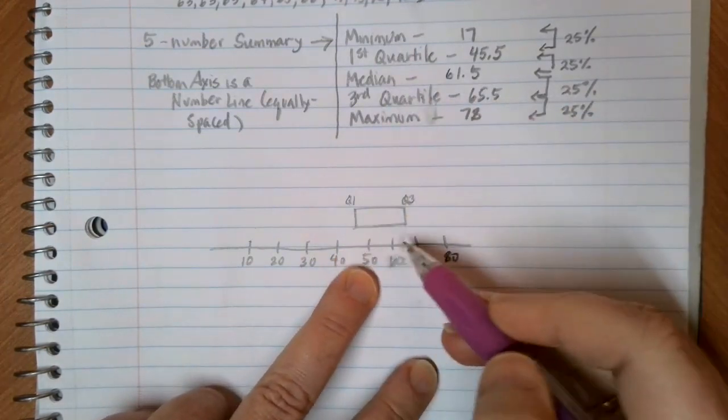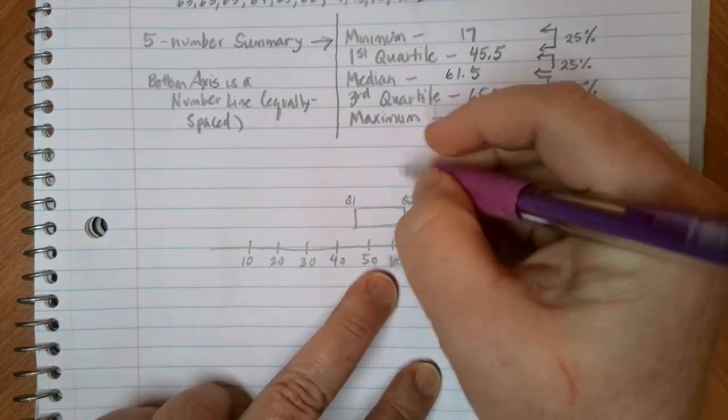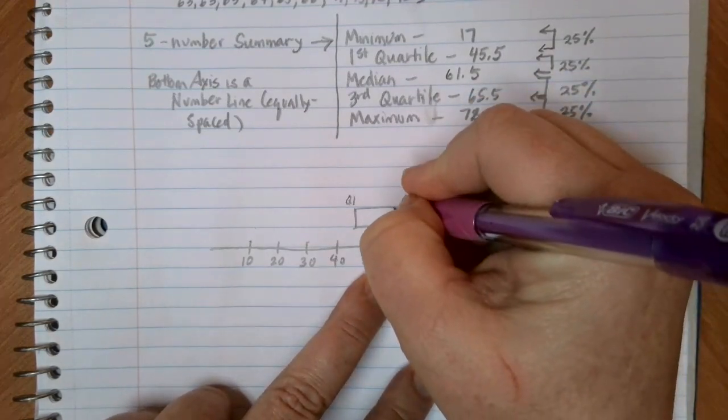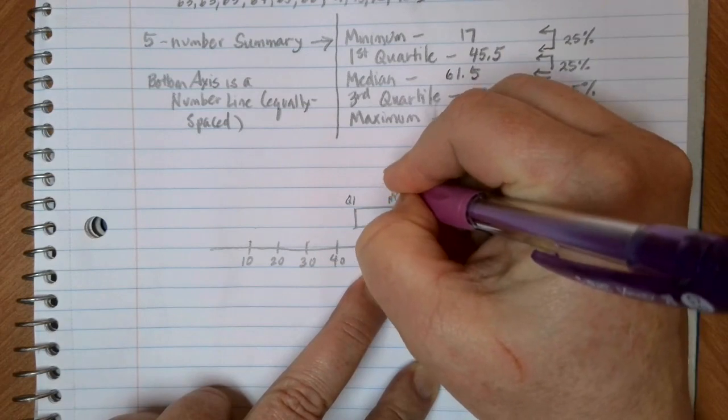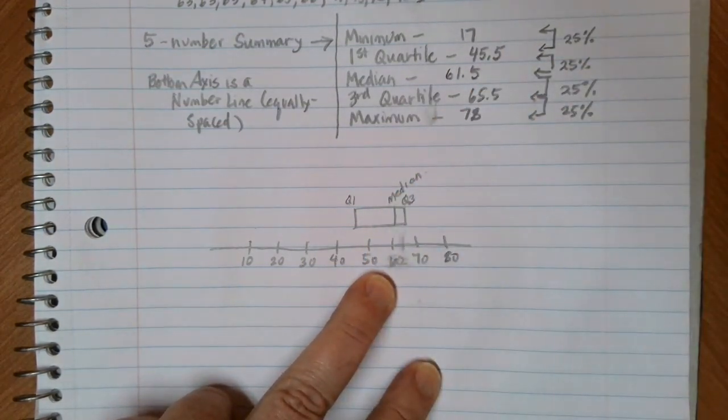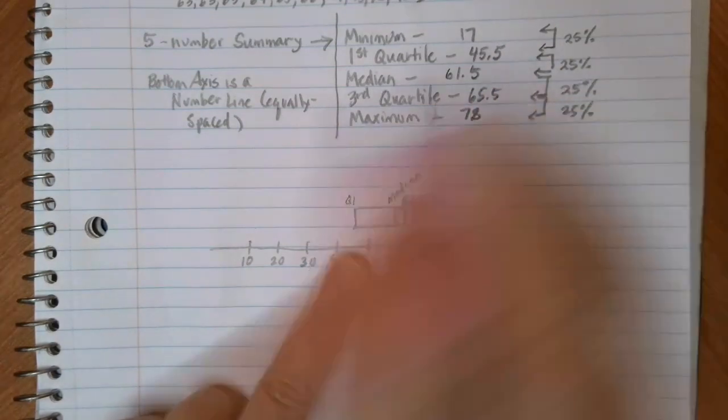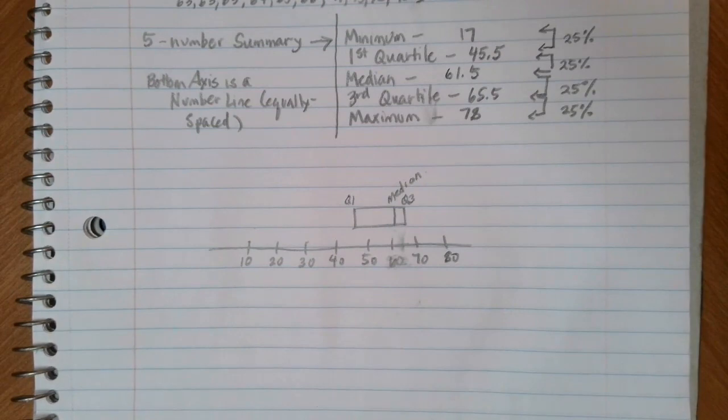The median is going to lie somewhere inside the box and whisker plot. In this case, our median is 61.5, so that line is going to be right here. And it's going to lie right there. So our box is between Q1 and Q3 with a line inside the box indicating the location of the median.